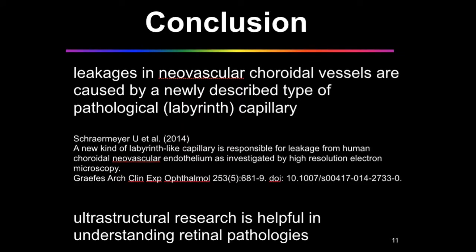In conclusion, leakages in neovascular choroidal vessels were caused by a newly described type of pathological labyrinth capillaries. A full publication has already been published in Graefe's Archive of Clinical and Experimental Ophthalmology. What is also important is that ultra-structural research is helpful in understanding retinal pathologies.